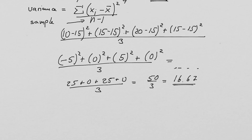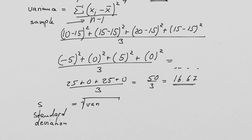We can now also calculate the standard deviation, usually abbreviated for a sample with S. The standard deviation is simply the square root of the variance. In this case that is the square root of 16.67, which gives us a standard deviation of 4.08.